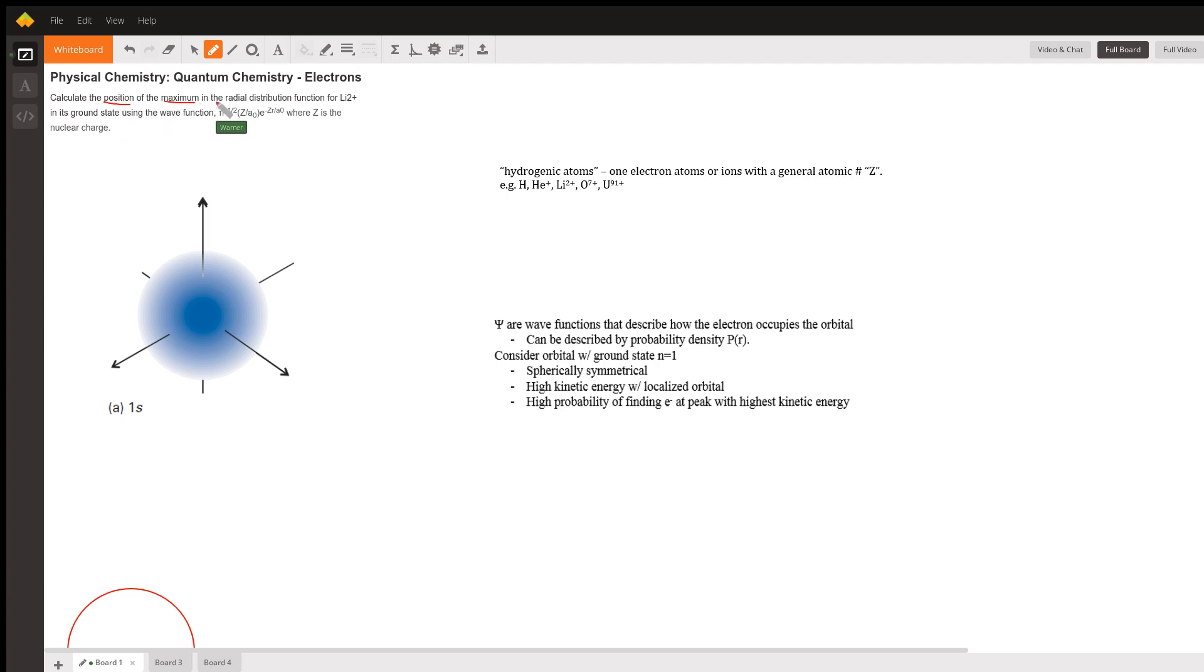Calculate the position of the maximum in the radial distribution function for lithium ion in its ground state using the wave function where z is the nuclear charge.